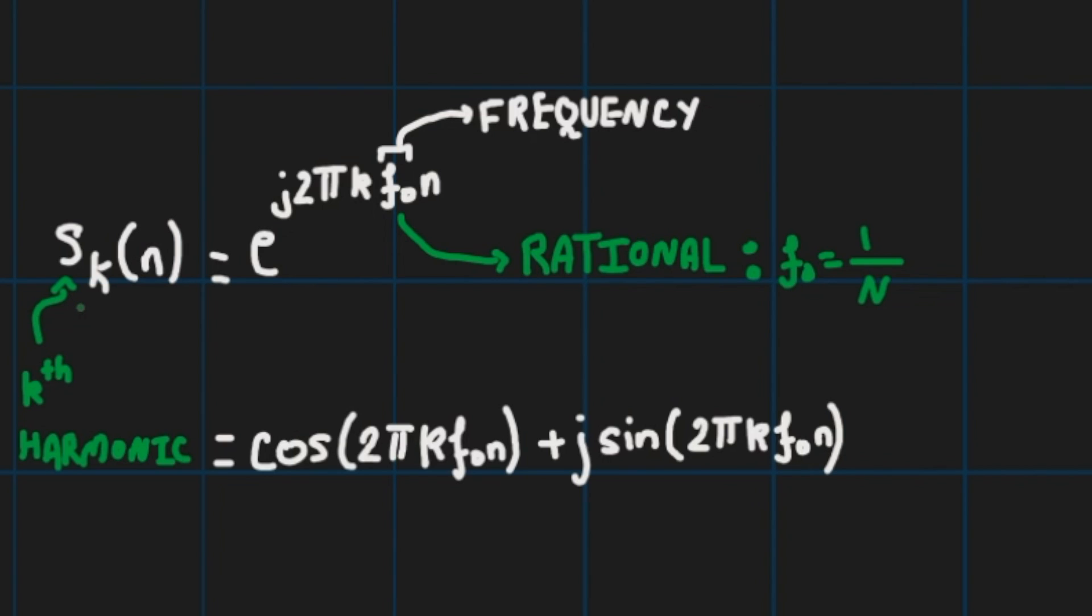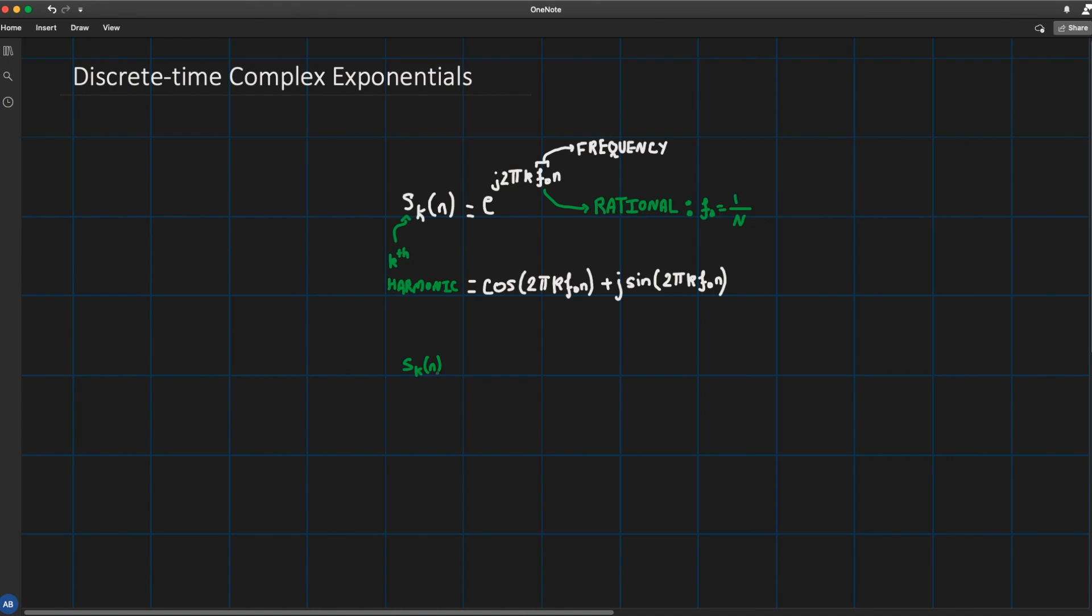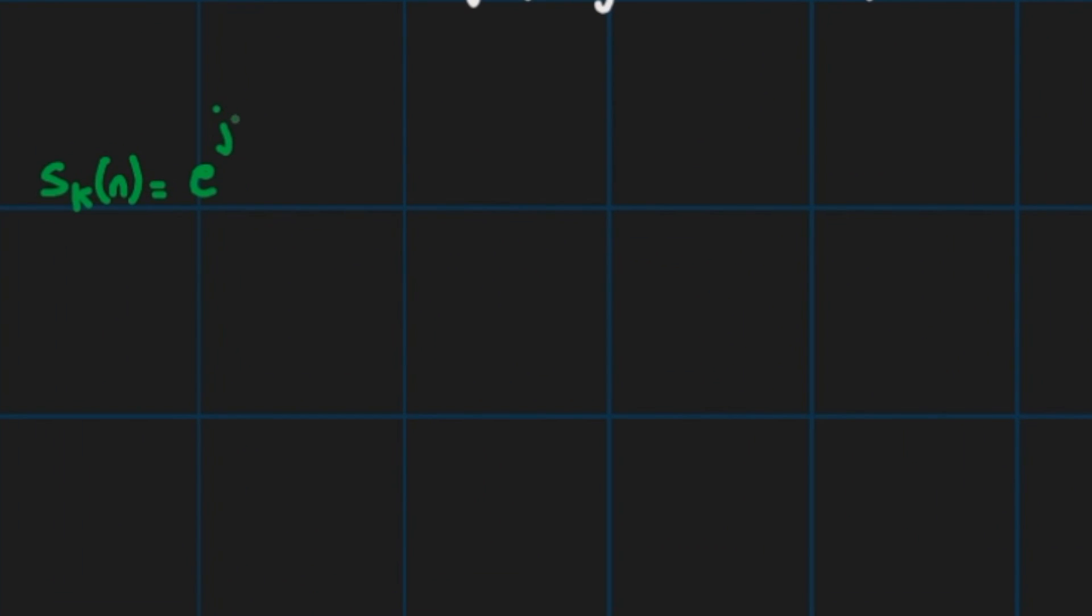So in contrast to the continuous time case we have a really important observation. It is that since s_k(n) expressed as a function of uppercase N that is e^(j2πkn/N)